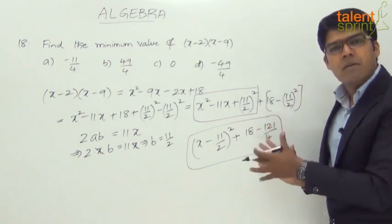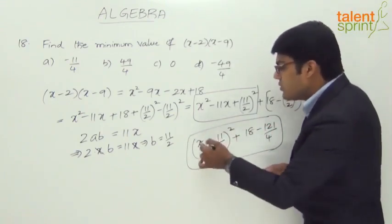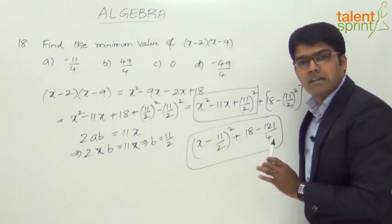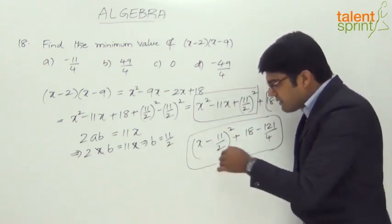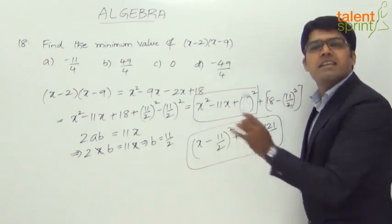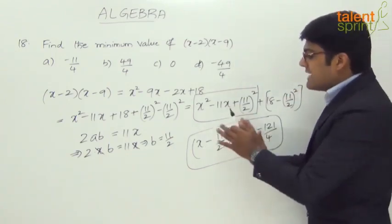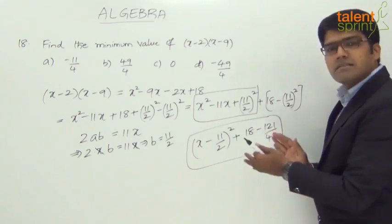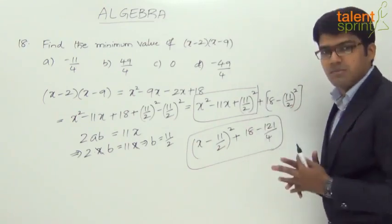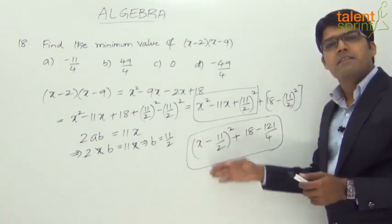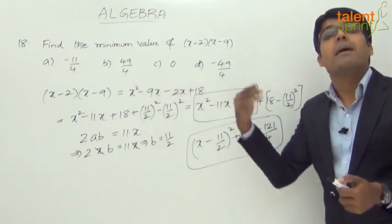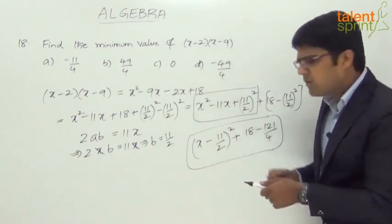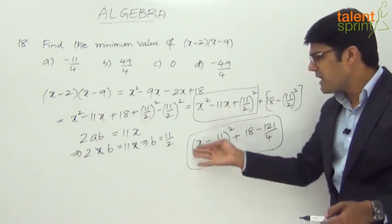For this expression to have the minimum value, we should make (x minus 11 by 2) whole square equal to 0. This squared term cannot be negative — even if the bracketed part is negative, squaring always gives a positive result. So the minimum it can be is 0, which happens when x equals 11 by 2. At that point, the squared part is nullified.